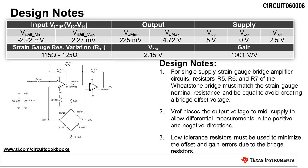Next, the reference voltage, Vref, biases the output voltage to mid-supply to allow differential measurements in the positive and negative directions. Finally, use low tolerance resistors to minimize the offset and gain errors due to the bridge resistors.